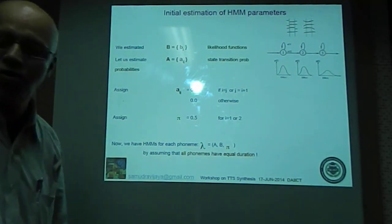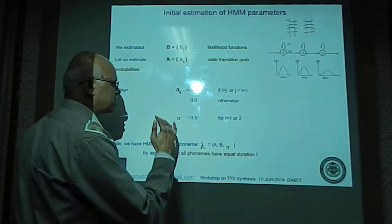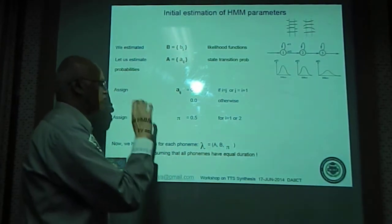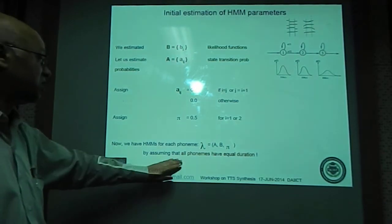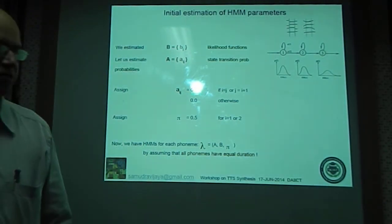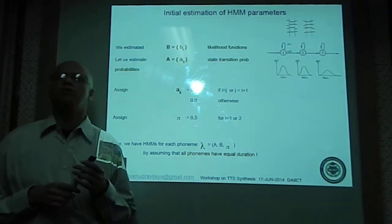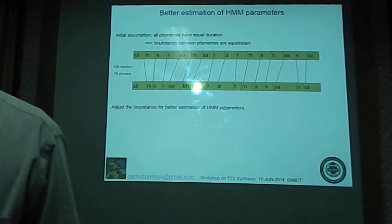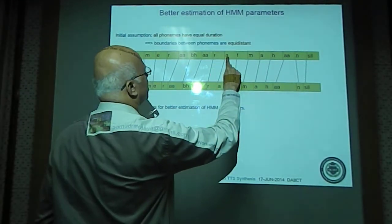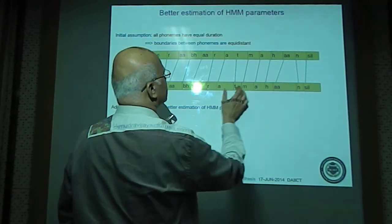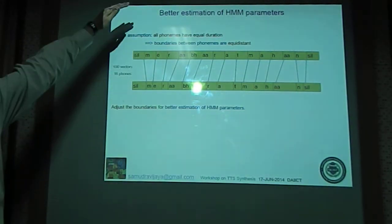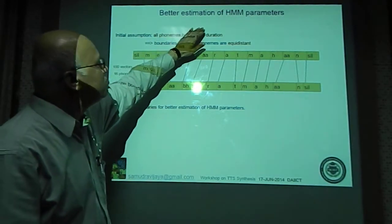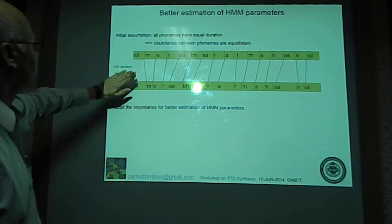Given a set of training data with word-level transcriptions and a dictionary, we have an initial estimate of the parameters for each phoneme. If there are 50 phonemes, we have 50 such initial HMMs. The assumption that all phonemes are of equal duration is not correct, but it is acceptable to begin with. We have the concept of long vowels and short vowels — the short vowel should be shorter than the long vowel, and consonants are generally shorter than vowels.